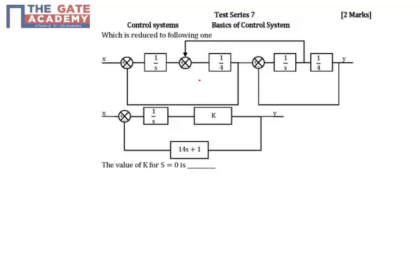In the given problem, a block diagram and its reduced form are given, with an unknown k. We need to find the value of k at s equal to 0. First, we have to bring the block diagram into the reduced form, and once we have that form, we can compare and find k. Once we know k, we can find its value at any value of s.